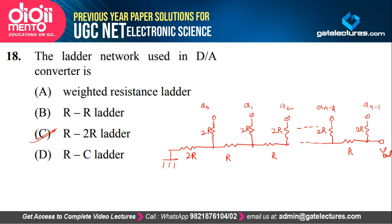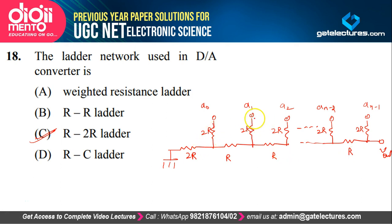When bits are applied to the R2R ladder, voltage divides between the reference voltage due to these resistances. When digital bits are applied, they are weighted according to their output voltage. Depending on whether each bit is 0 or 1, a corresponding step value between 0 and the reference voltage is generated, and these are added to produce the output voltage. This is how digital-to-analog conversion takes place using the R2R ladder.